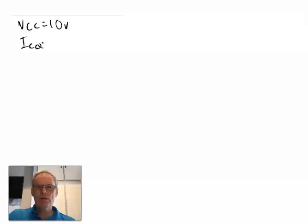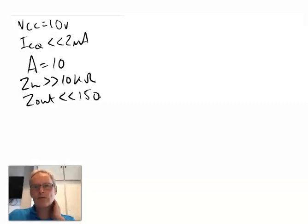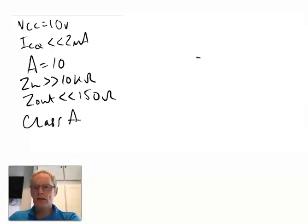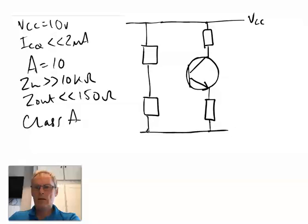Our amplifier has a 10 volt supply. The quiescent current ICQ must be less than 2 milliamps, the voltage gain needs to be approximately 10, Zin greater than 10 kilohms, Zout less than 150 ohms, and it must exhibit Class A operation. So let's draw a common emitter amplifier in a Class A arrangement using potential divider bias.